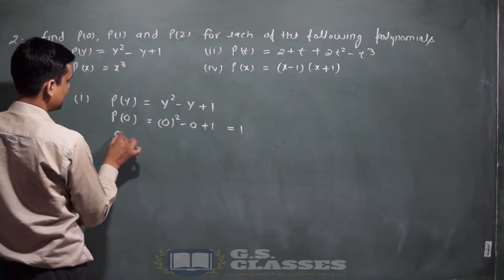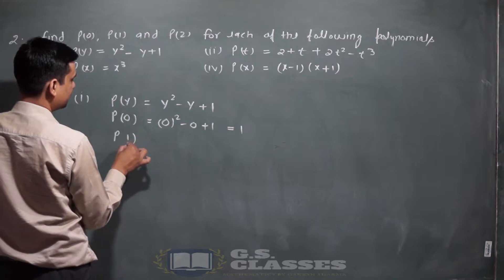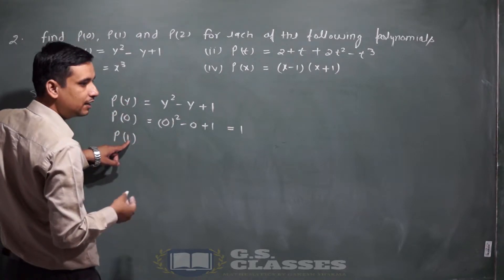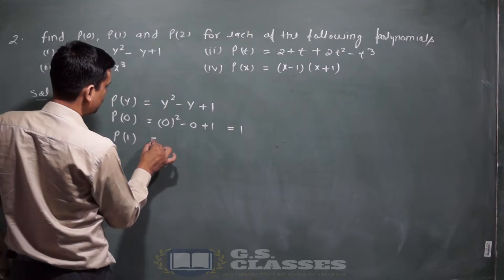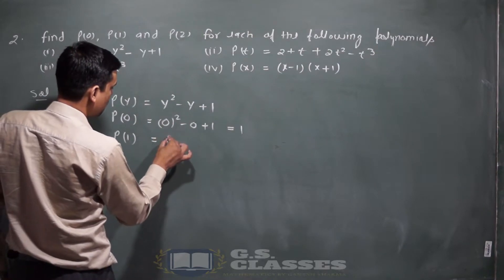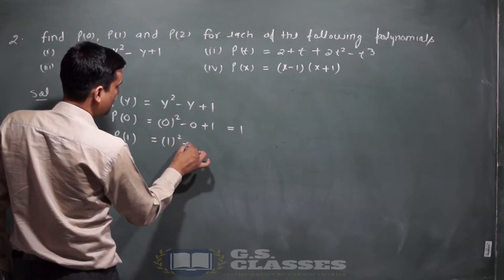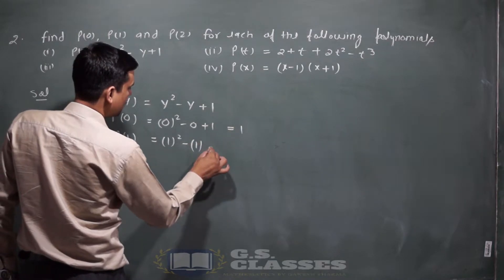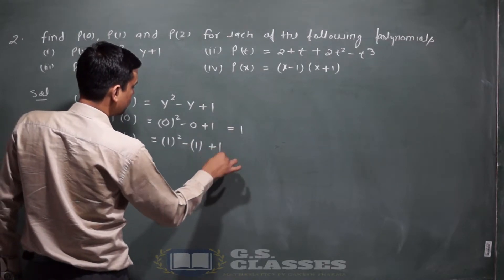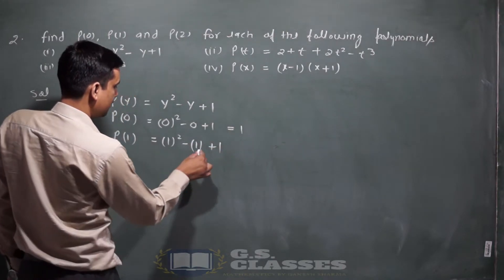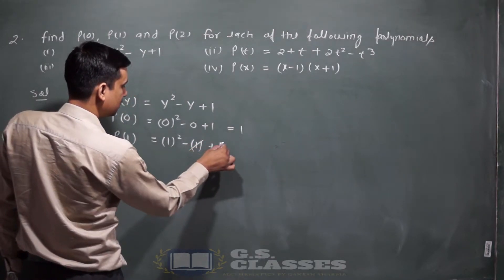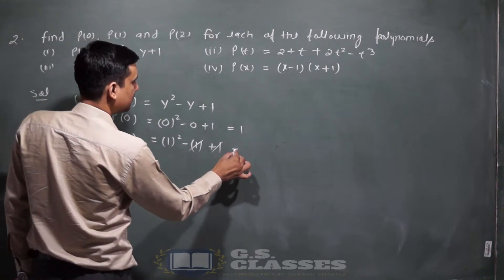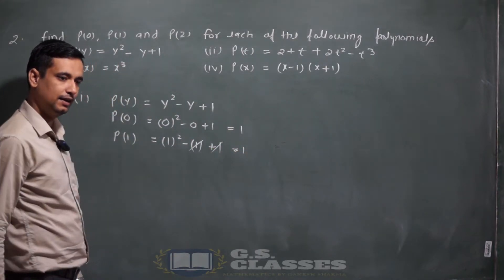इसके बाद p(1) — मतलब y की value 1 put करनी है। y की value 1 का square, minus 1, plus 1। Minus 1 और plus 1 cancel out। 1 का square = 1। Answer आ गया: 1।